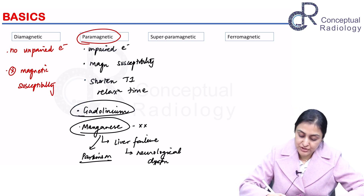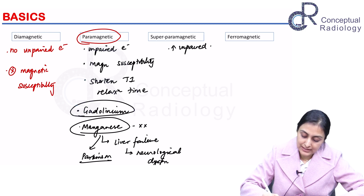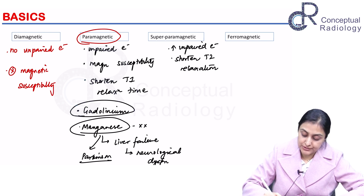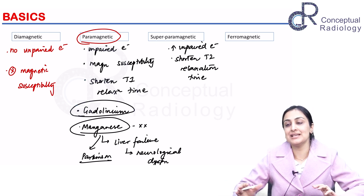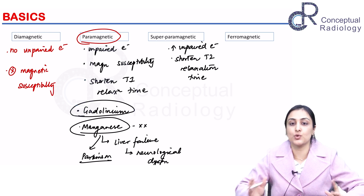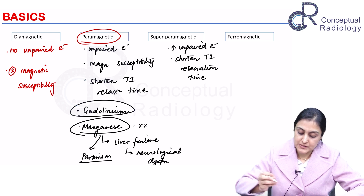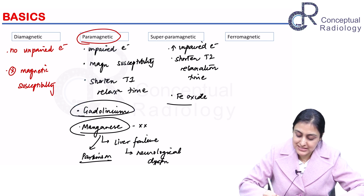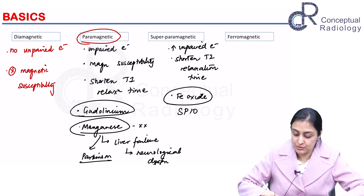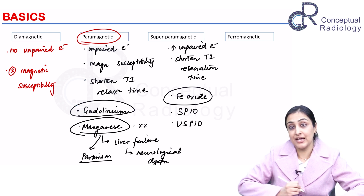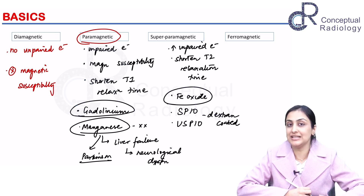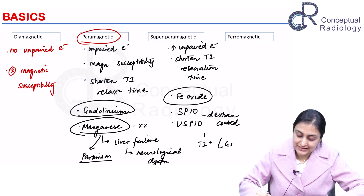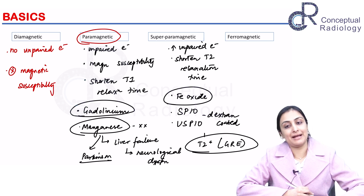Superparamagnetic compounds have a lot of unpaired electrons and they shorten the T2 relaxation time, causing a signal drop seen on T2-weighted images. More importantly, we use a T2* or gradient echo image for visualizing these superparamagnetic substances. The example here is iron oxide — SPIO (superparamagnetic iron oxide) and USPIO (ultra-small superparamagnetic iron oxide), which is dextran-coated iron oxide.